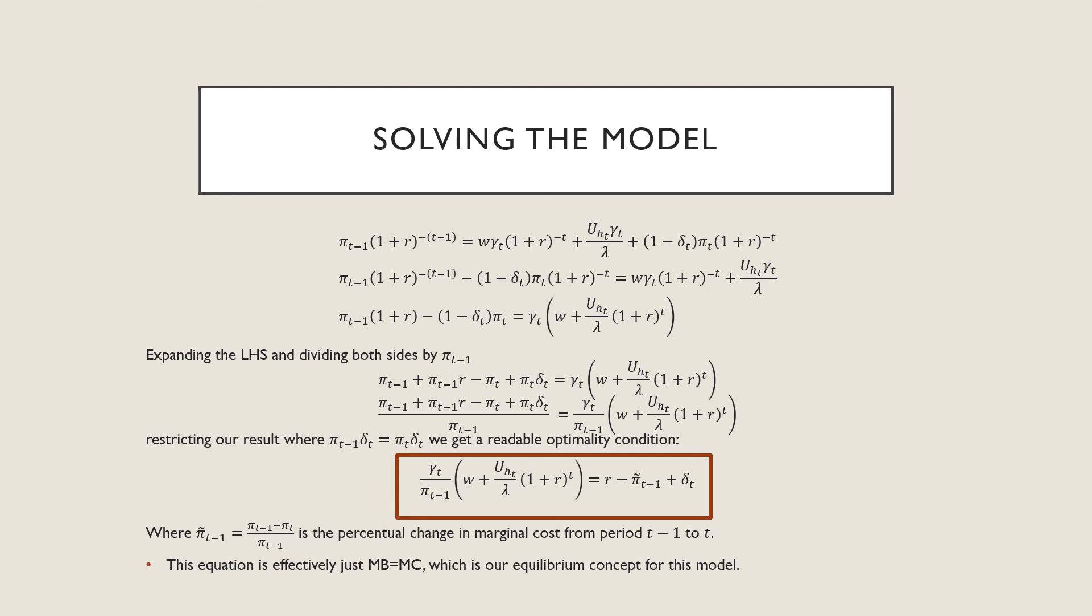This pi tilde t minus one term is what's called the percentual change in marginal cost from period t minus one to t. This marginal cost is with respect to investment. Now this equation is just where marginal benefit equals marginal cost, which is our equilibrium concept for this model.